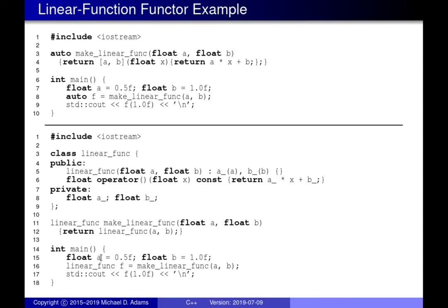In main, we want to evaluate the linear function where A is 0.5 and B is 1, then evaluate at x = 1. We create a linear_funk object by calling the factory function passing A and B, which returns an object associated with A = 0.5 and B = 1.0. On line 17 we apply the function call operator - f looks like a function call but f is an object that overloads operator(), so it computes ax + b and prints the result.